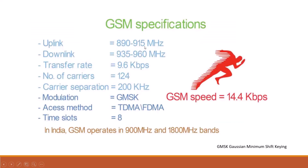GSM has certain specifications like uplink, downlink, transfer rate, etc., to carry certain information. Mainly it has GMSK digital modulation and TDMA access method. GSM data speeds were approximately 14.4 kilobytes per second. GSM uses different bands in different regions. Here in India, GSM operates in 900 MHz and 1800 MHz bands.